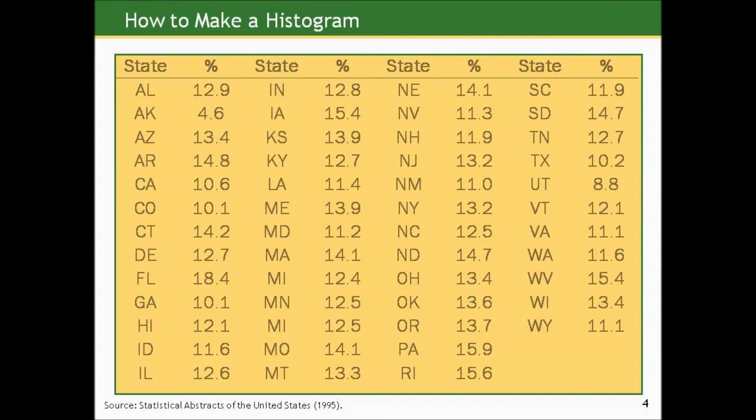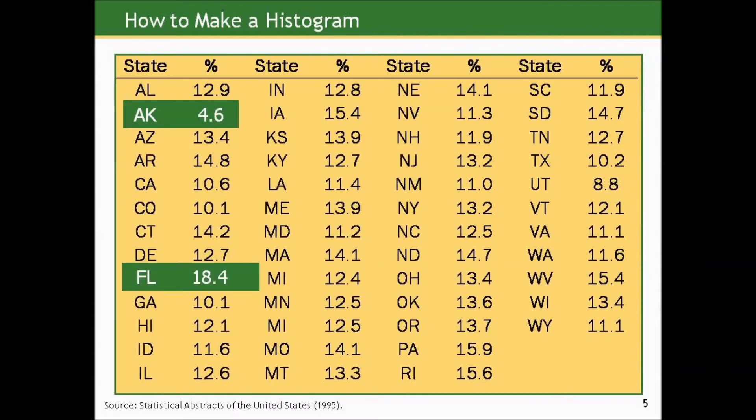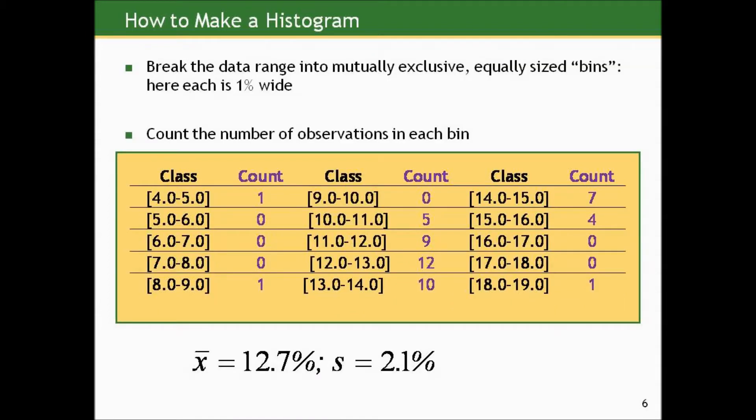But in addition, it may be worth looking at a picture as well. So here are just some interesting facts. Alaska had the smallest percentage at 4.6%, and Florida had the highest percentage of residents over 65 years of age at 18.4%. So how could we visually display this to figure out what the smallest and largest values are and what the distribution of data is in this group around their center?